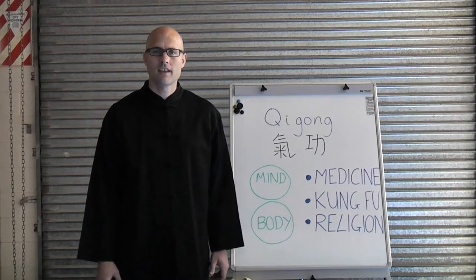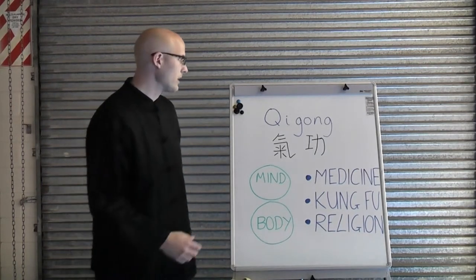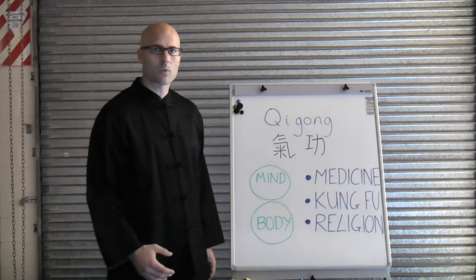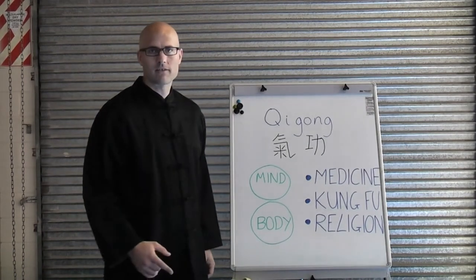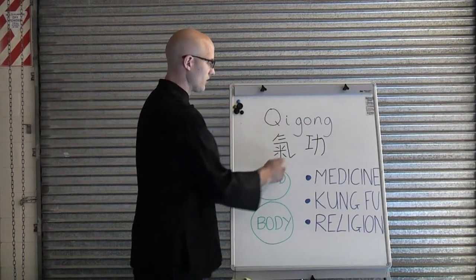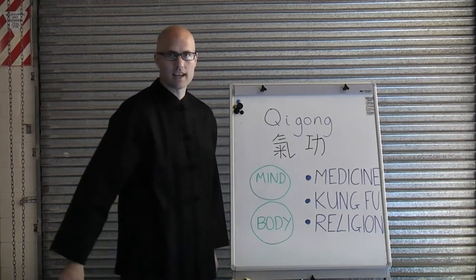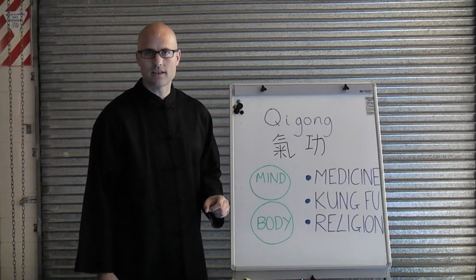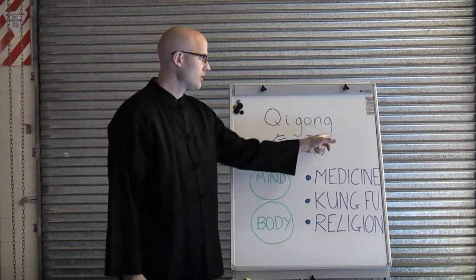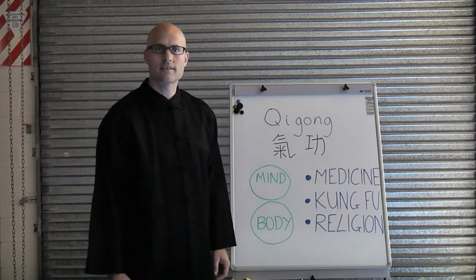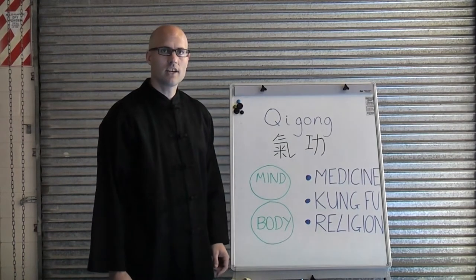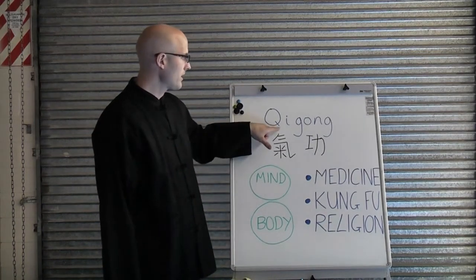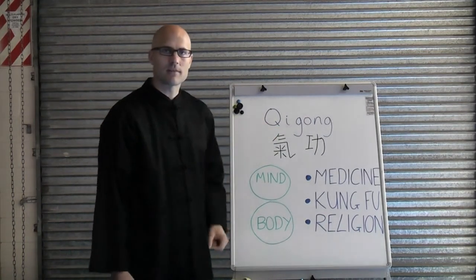To begin with, we can come up with the definition by looking at the word itself. It's made of two parts, qi and gong. These are the Chinese characters here. Qi literally means energy, and gong means work, skill, or achievement. So qigong is any practice that works with energy and develops skill with it.